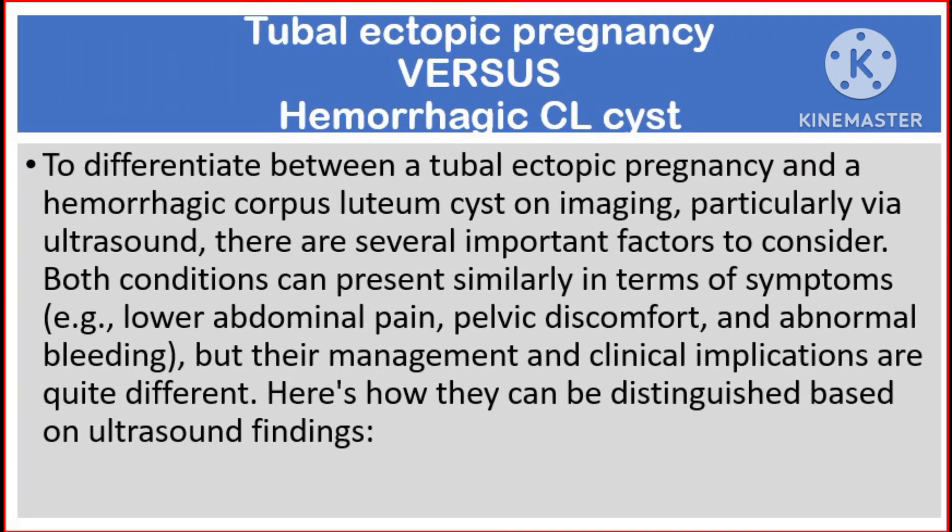To differentiate between a tubal ectopic pregnancy and a hemorrhagic corpus luteum cyst on imaging, particularly via ultrasound, there are several important factors to consider. Both conditions can present similarly in terms of symptoms — for example, lower abdominal pain, pelvic discomfort, and abnormal bleeding — but their management and clinical implications are quite different. Here is how they can be distinguished based on ultrasound findings.